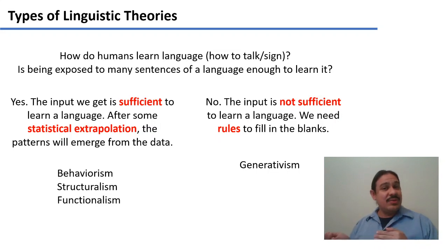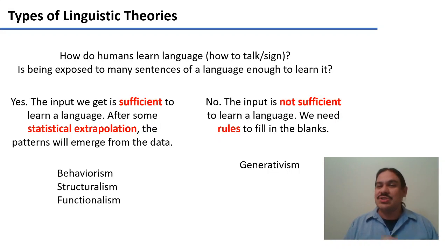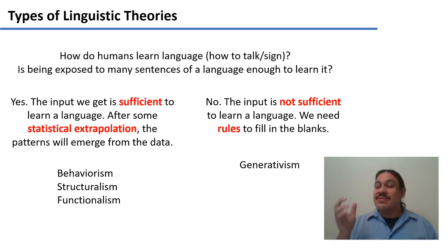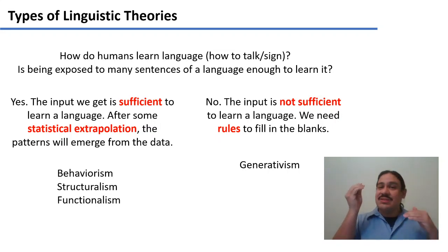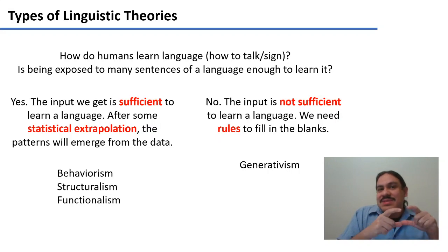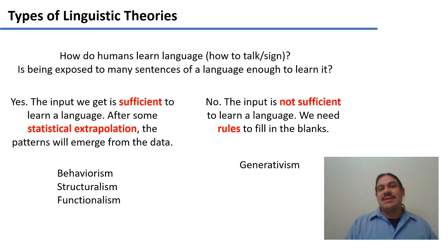There's a second current of thought that says no — that being exposed to many sentences of a language is not enough. That somehow the input is not rich enough; this is called poverty of stimulus. We have something in our brain that fills in the blanks, and the input is essentially a way for us to fill in those blanks. The rules or mechanisms in our brain instantiate language.